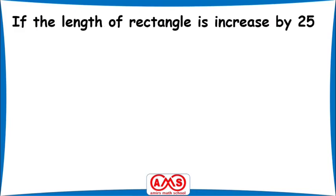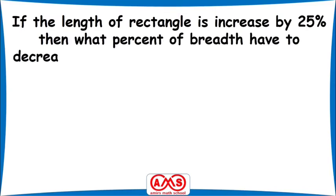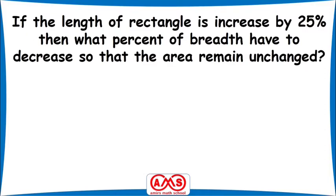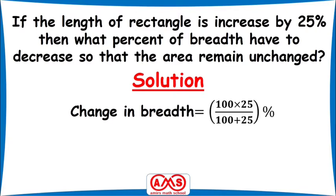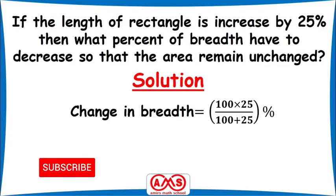If the length of a rectangle is increased by 25%, then what percent does the breadth have to decrease so that the area remains unchanged? The condition is that the area remains unchanged while the length increases by 25%. The solution formula is: change in breadth equals 100 times 25 divided by (100 plus 25) percent. That is, the change in breadth equals 100 times the percentage of length increase, divided by 100 plus the percentage of length increase.